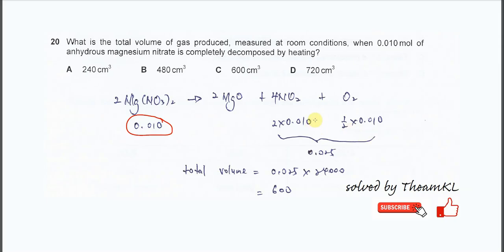Now sum up these two moles - the moles of NO2 and the moles of oxygen - you will get 0.025. This 0.025 needs to be multiplied by the molar volume because the question mentions room conditions, so the molar volume is 24,000 cm³. After you calculate, you should get 600 cm³, which is C. That's all, thank you.